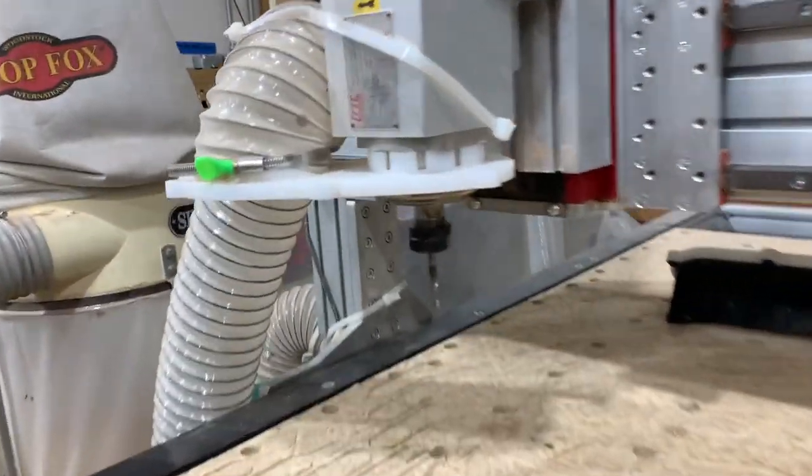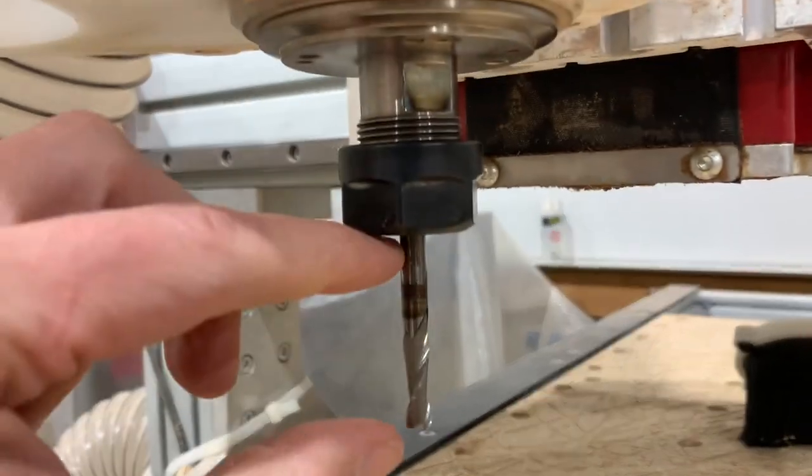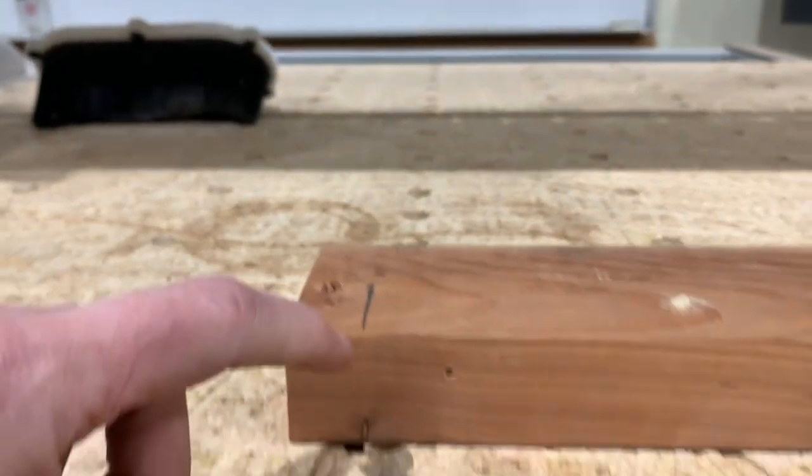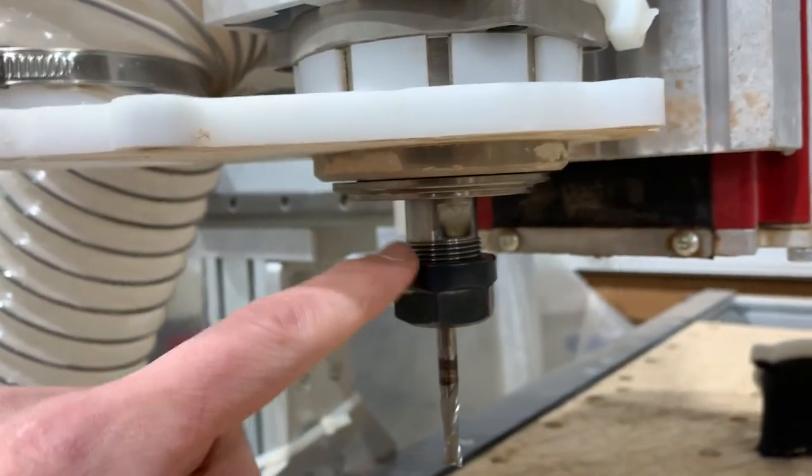Okay. And now we go back to focus. And now the end mill is in the collet. And we have enough room to cut through a piece of 2x4. Okay. Without hitting, without jamming the collet into the wood. Okay. Step one. We did that. Good.